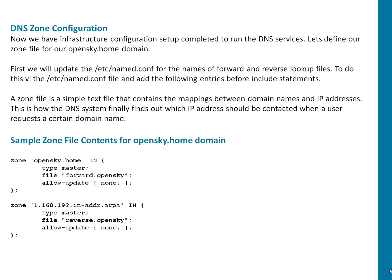A zone file is a simple text file that contains the mapping between domain names and IP addresses. Basically you specify which configuration file to be used for forward lookup, which particular file to be used for reverse lookup, and here we also configure the type of that particular domain and whether allow-update — which is basically to update the zone — is allowed or not.